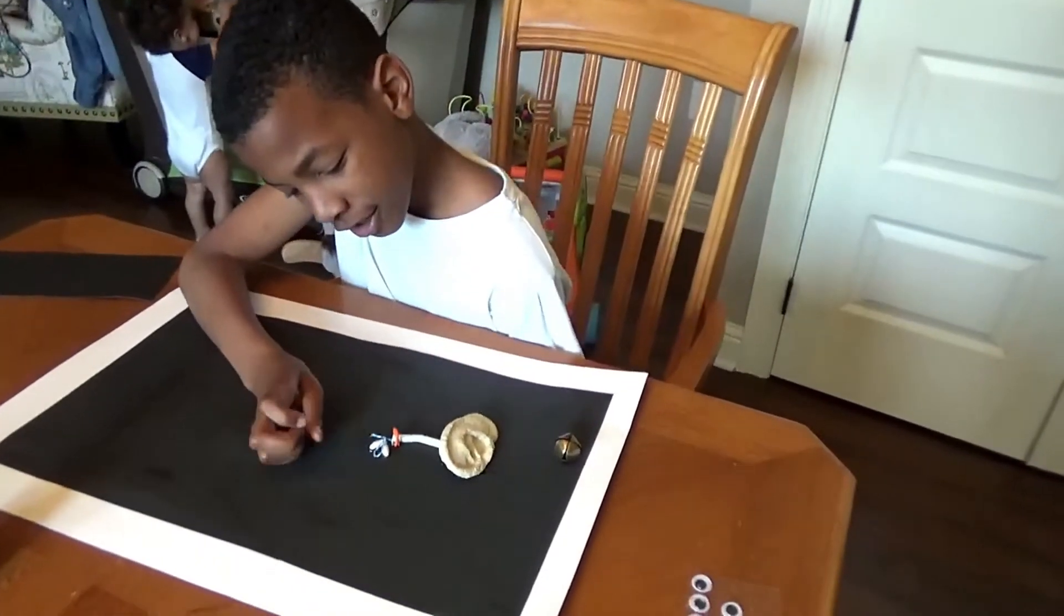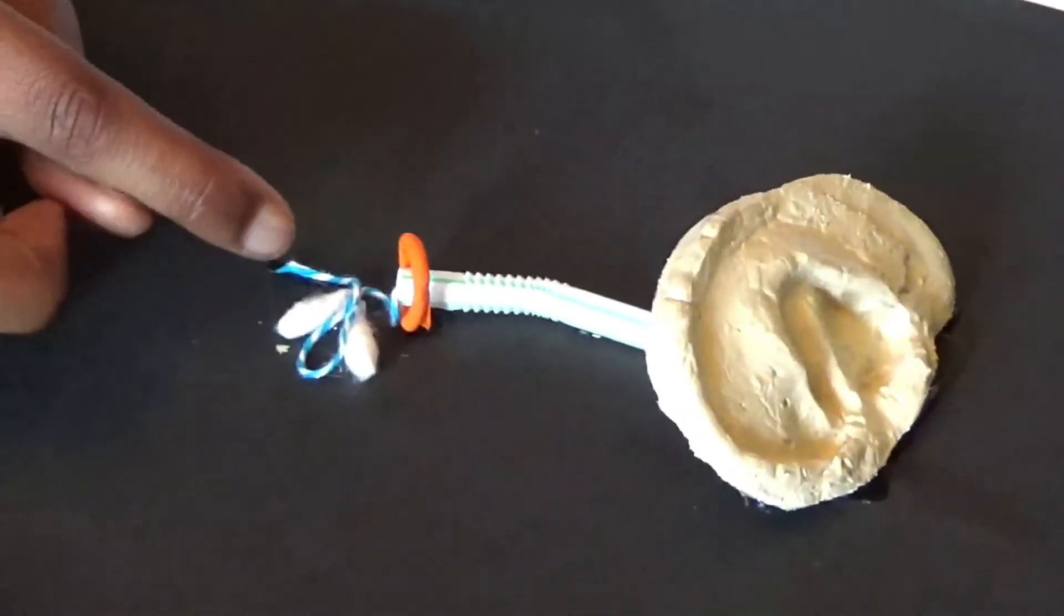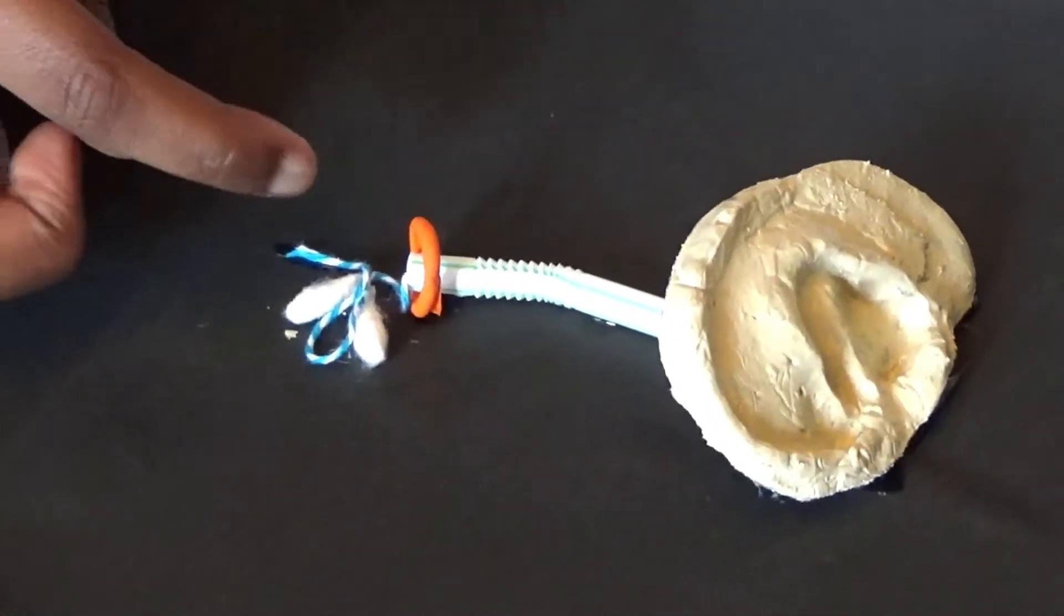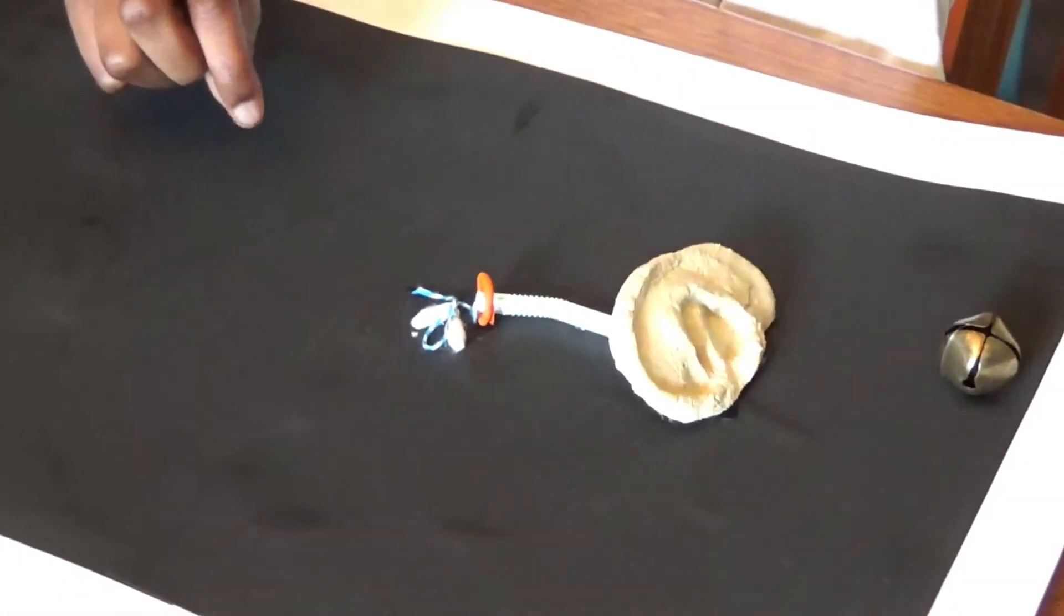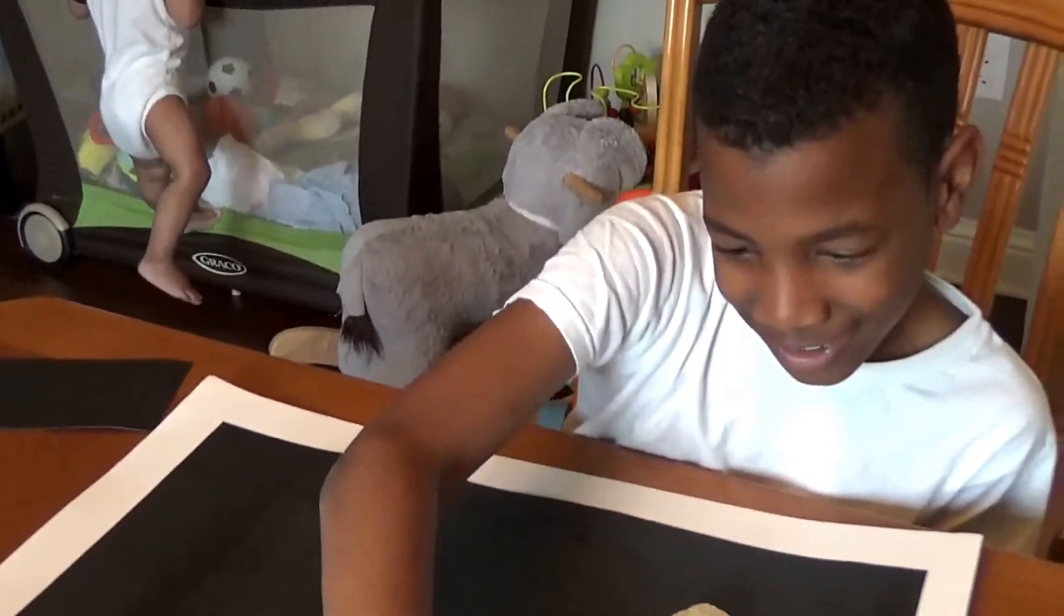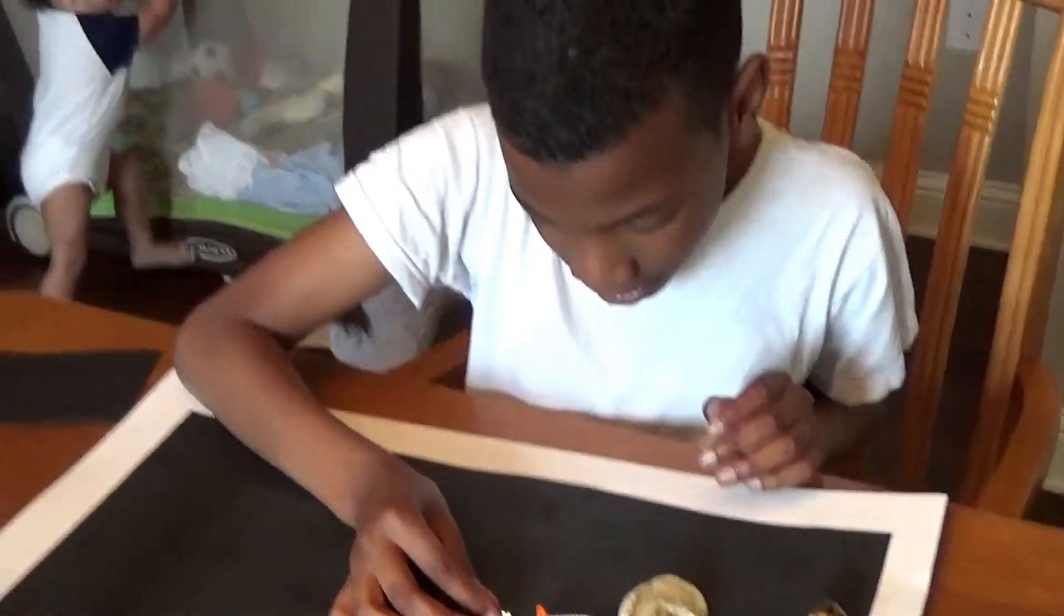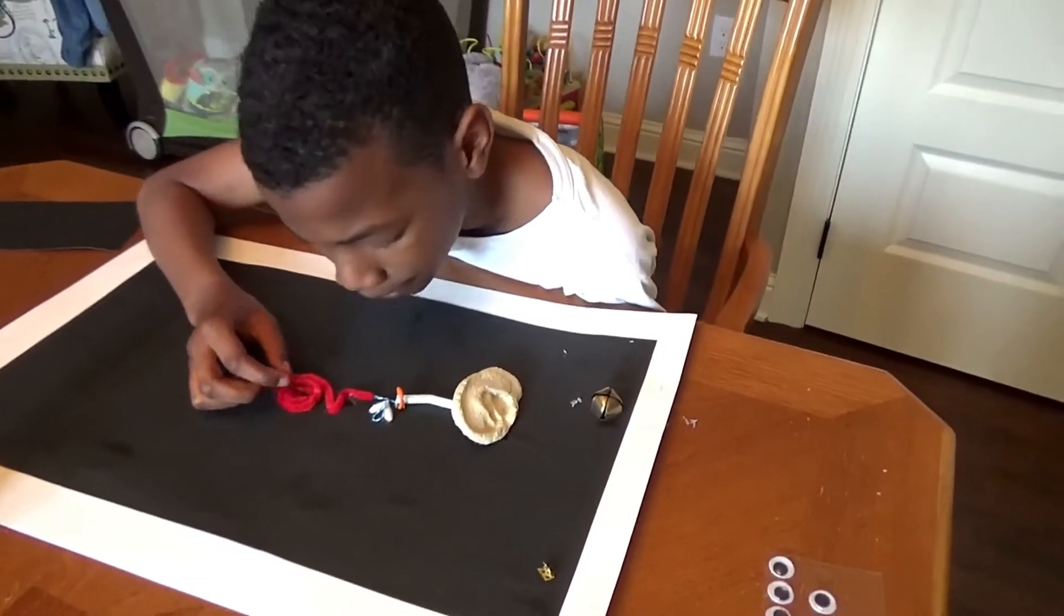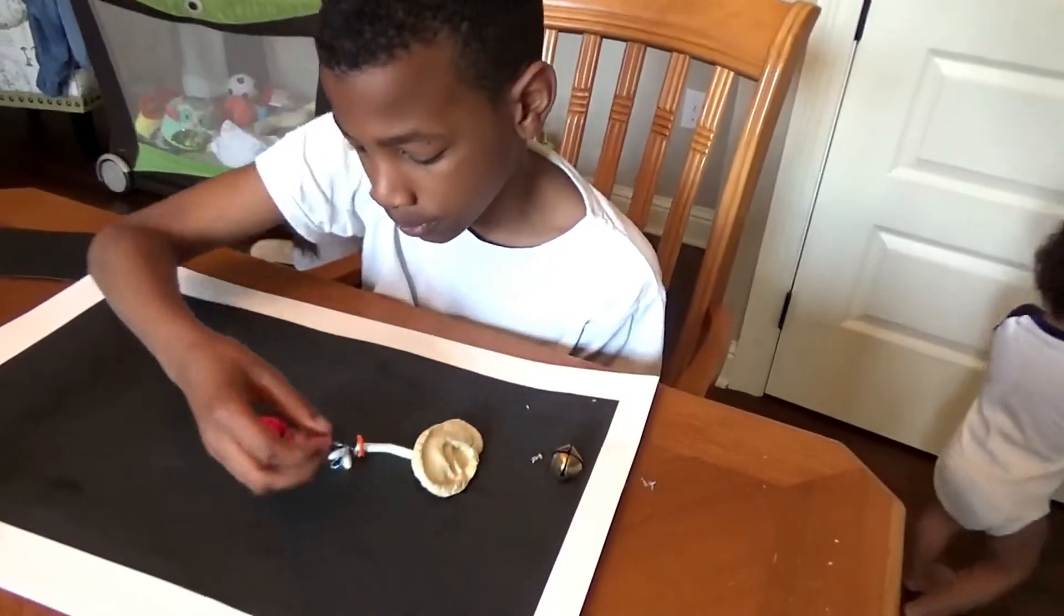So I just added the hammer - that was the longer one - and then the anvil. I put the string kind of inside of the straw, and now I'm about to add the stirrup. And I think we're gonna hot glue it. So first I put the cochlea on, and then I'm gonna put the stirrup right here.